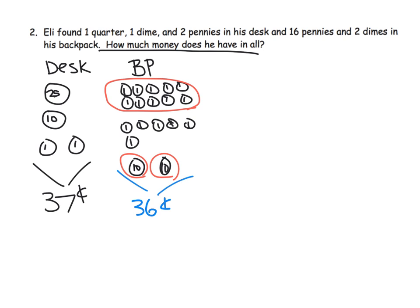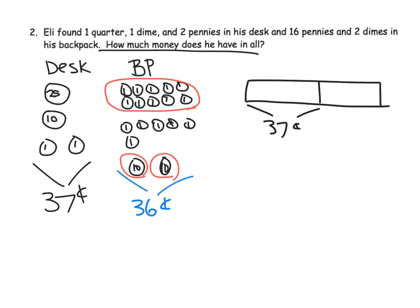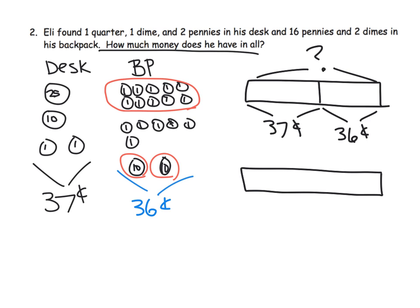Now to represent this using a tape diagram, we might show it like this. One way might be to say here is 37 cents and here is 36 cents, and we want to know the total. Another way that students might show this is to be a little more literal and put the 37 cents inside, then the 36 cents inside, and then put your question mark there. That's also perfectly fine.